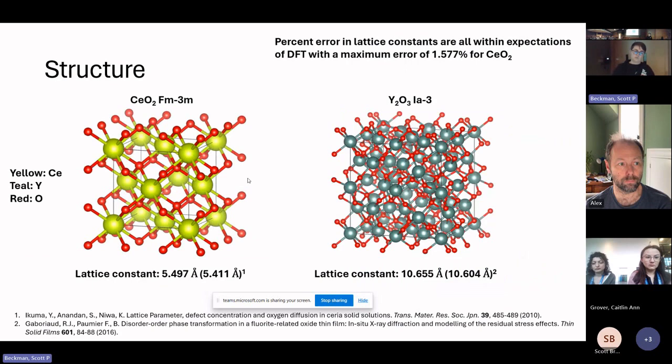To begin, just looking at the pure crystals and making sure we're able to corroborate what's being seen already, looking at the structure and calculating lattice constants. Over here we have ceria in the fluorite structure, and here we have yttria in the bixbyite structure. We can see from the lattice constants calculated using DFT, these compare well with the experiments given in parentheses down below. They're within the errors expected of using DFT.